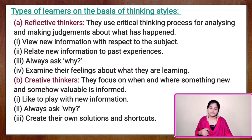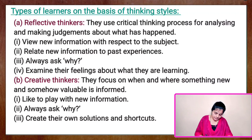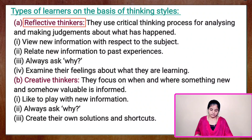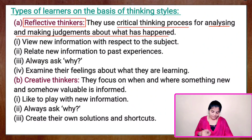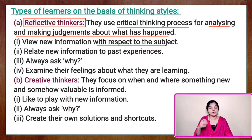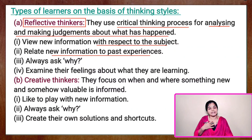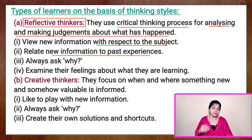Now we have the classifications of learners on the basis of thinking style. Based on thinking style, we have four different classifications. The first classification is reflective thinkers. These reflective thinkers use critical thinking process for analyzing and making judgments about what has happened. They view new information with respect to the subject, relate new information to past experiences, always ask the question 'why,' and examine their feelings about what they are learning.